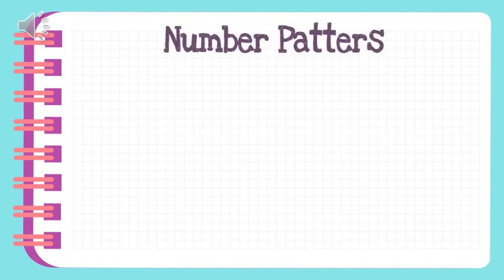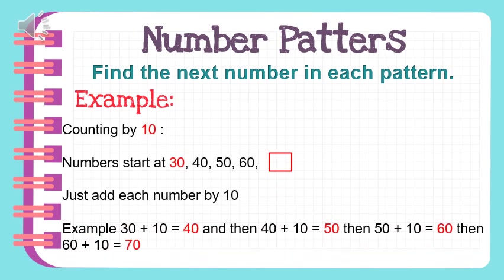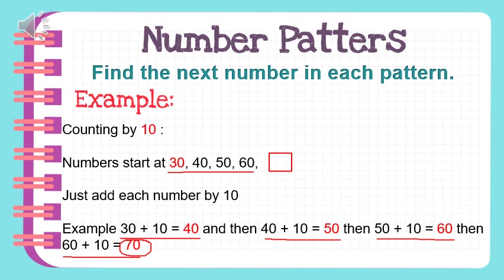Find the next number in each pattern. Counting by ten, with numbers starting at thirty. Just add each number by ten: thirty, forty, fifty, sixty, and what's next? Thirty plus ten is forty, forty plus ten is fifty, fifty plus ten equals sixty, sixty plus ten is seventy. So the answer is seventy: thirty, forty, fifty, sixty, and seventy.